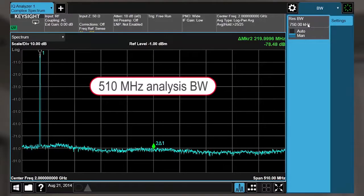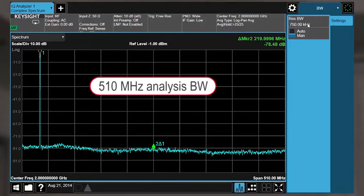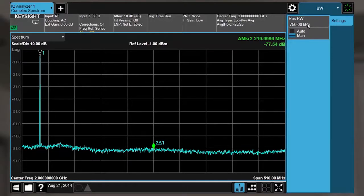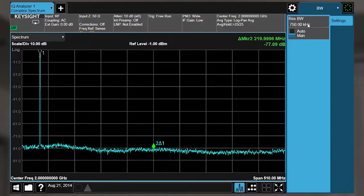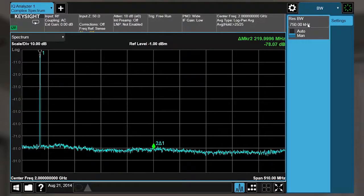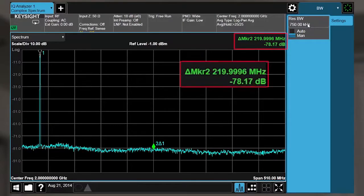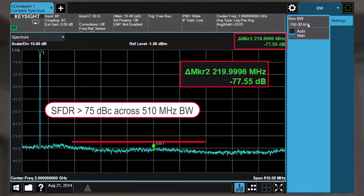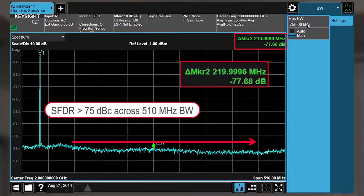Analysis bandwidth is important to meet the needs of communication systems and narrow radar pulse signals. See your signals of interest clearly with the industry-leading IF quality of the UXA, providing a spurious-free dynamic range of greater than 75 dBc across the full 510 MHz bandwidth.